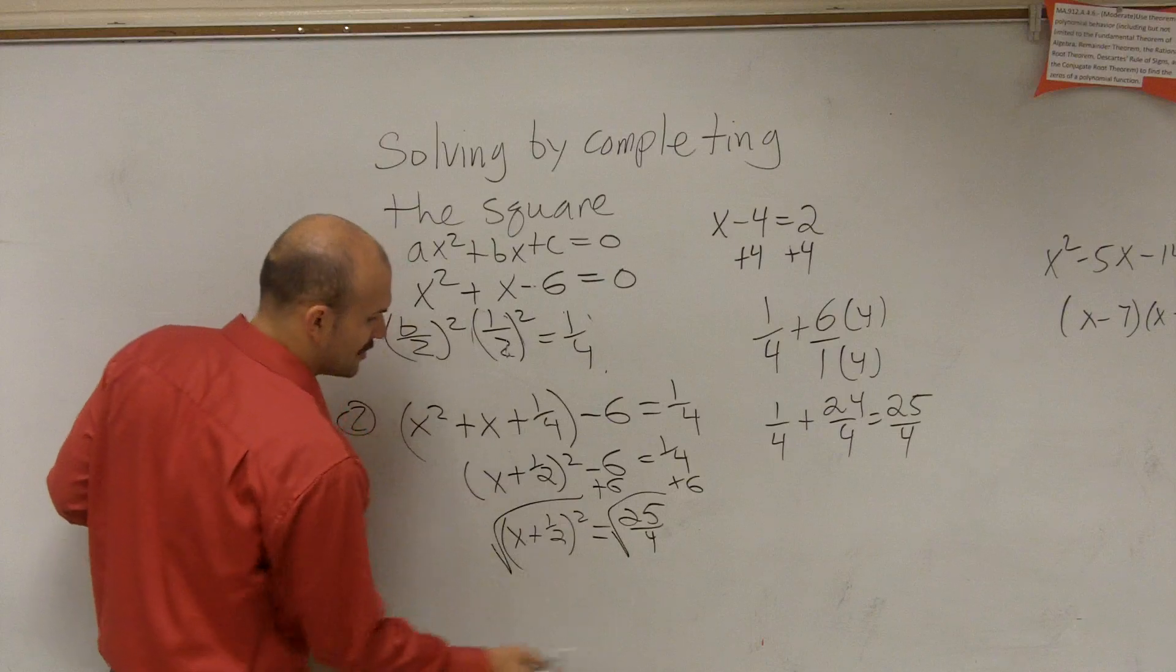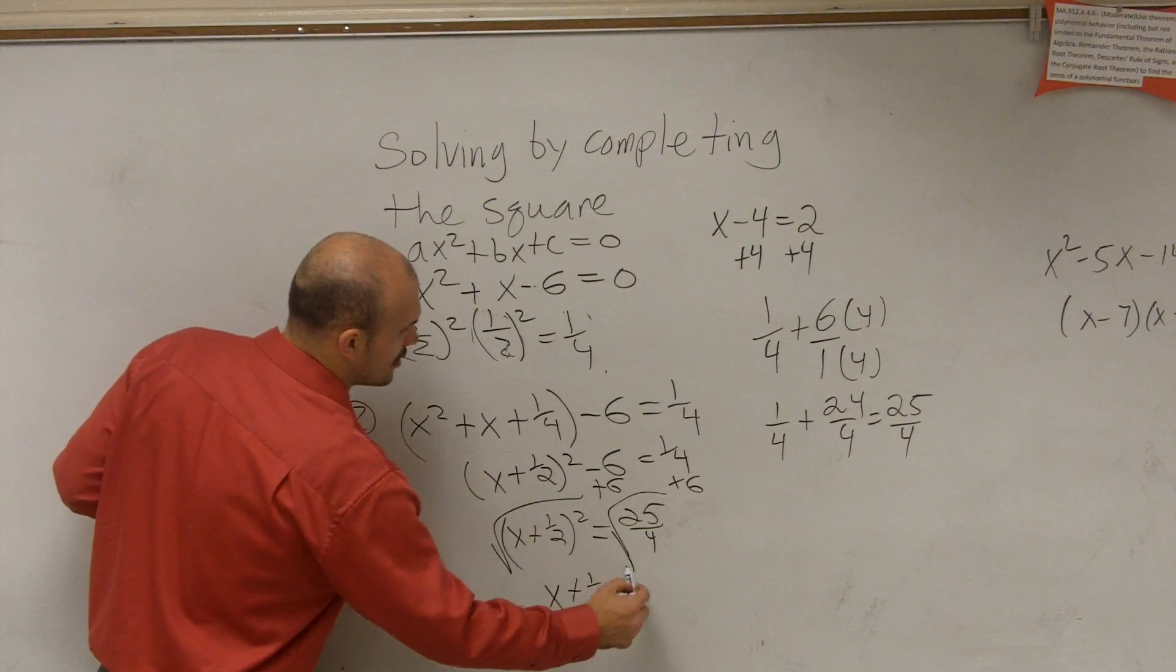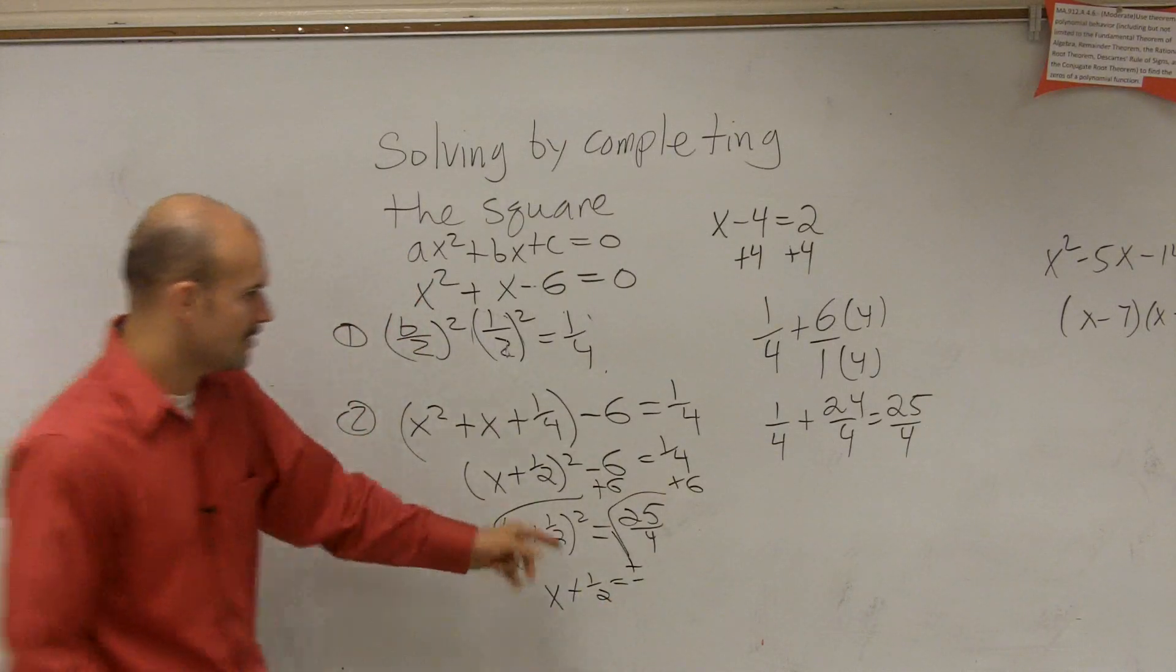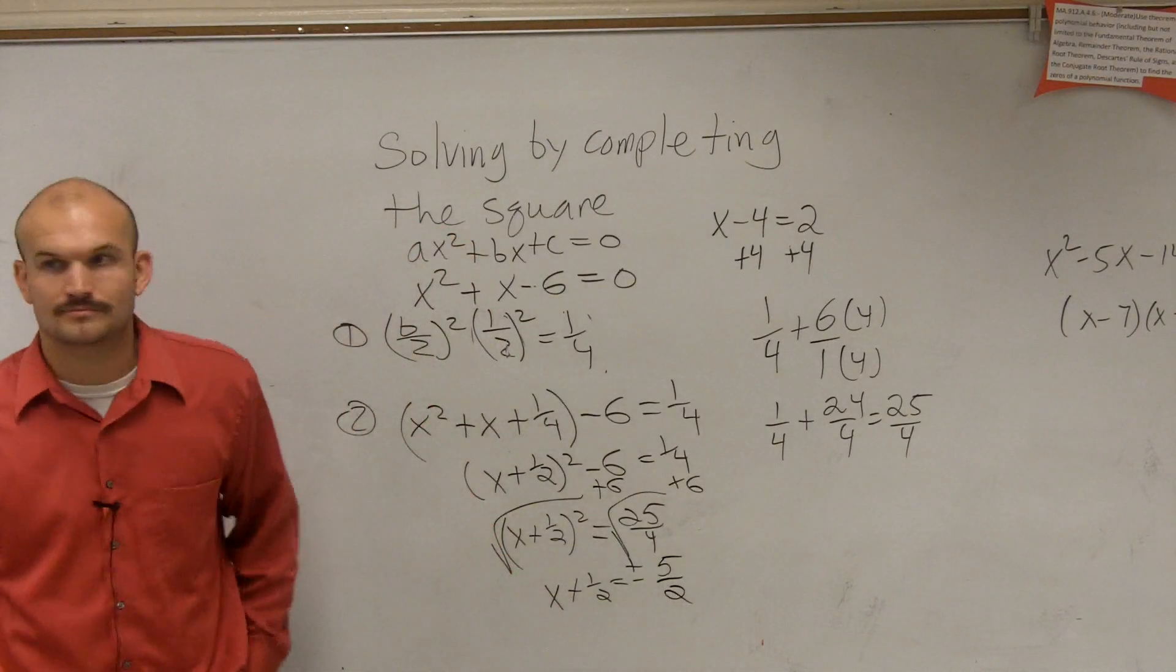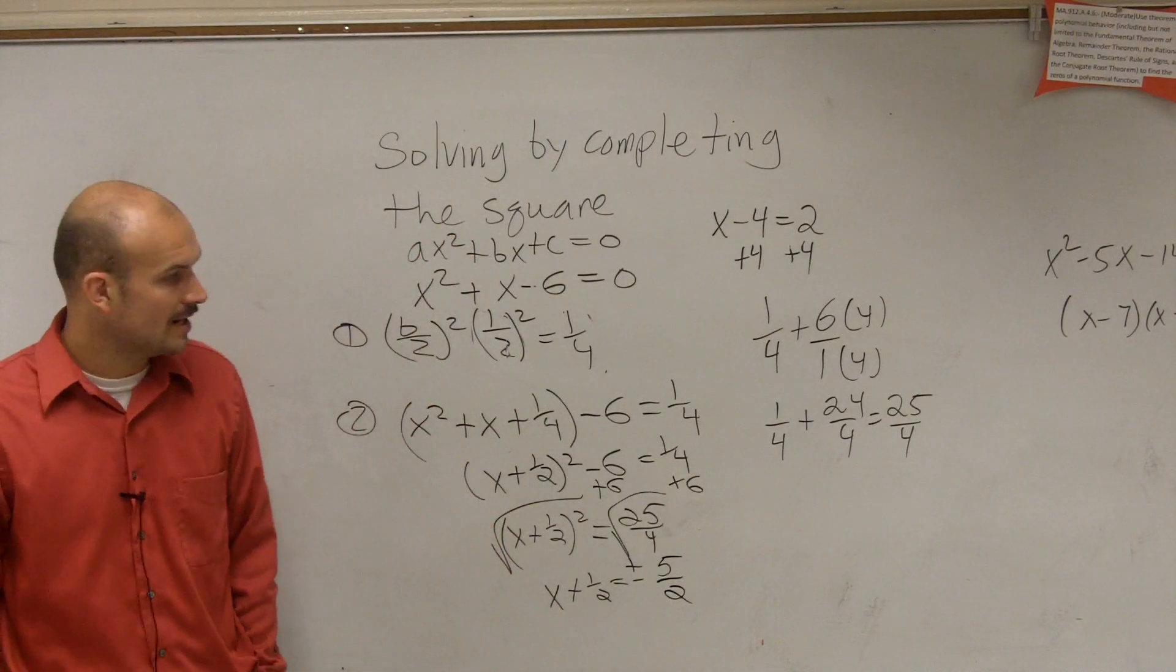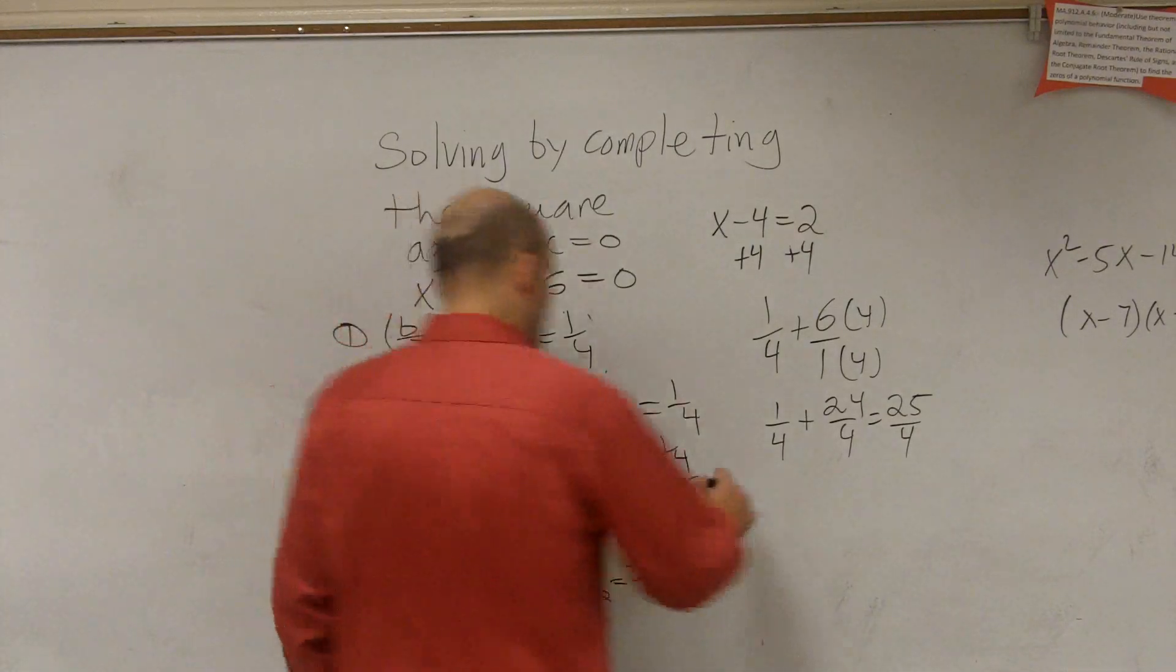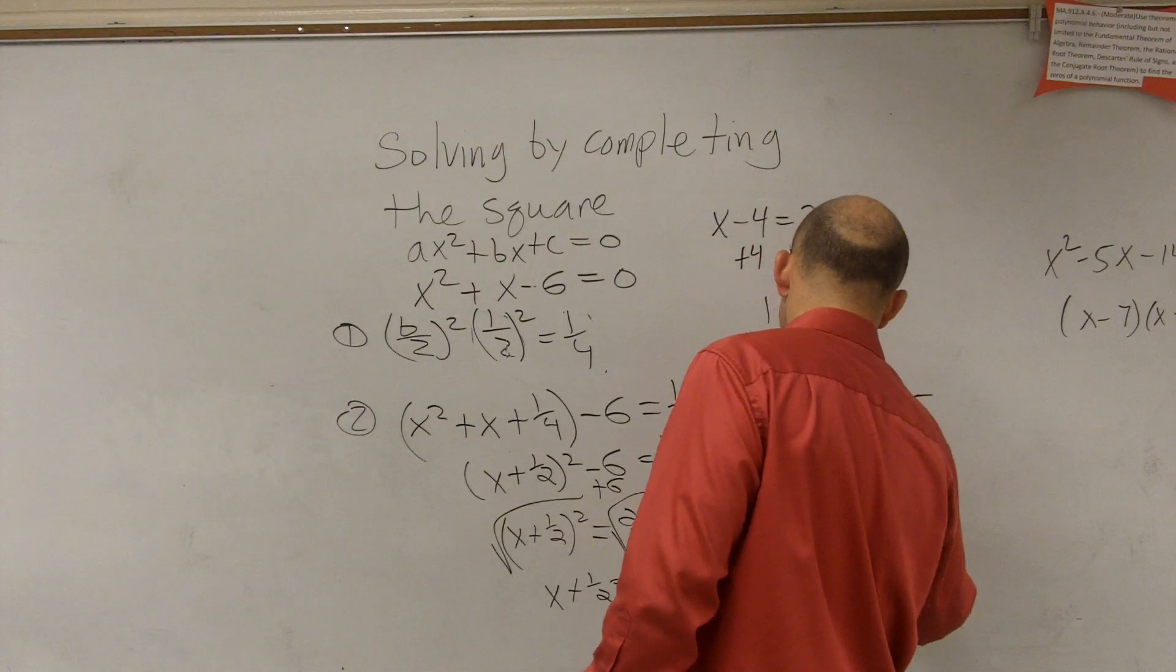we just use our inverse operations. Take the square root, take the square root. x plus 1 half equals plus or minus 5 over 2.